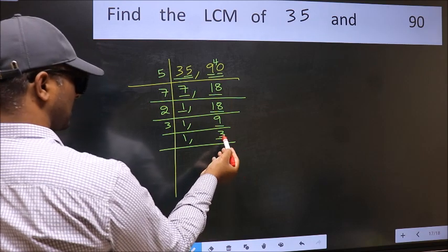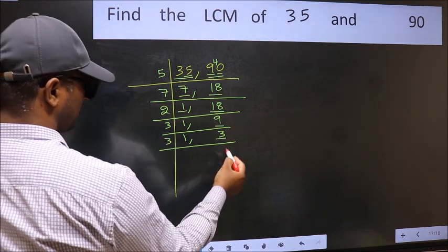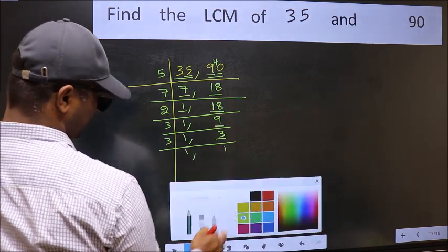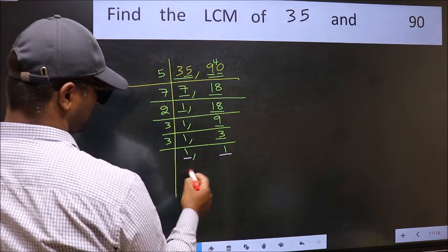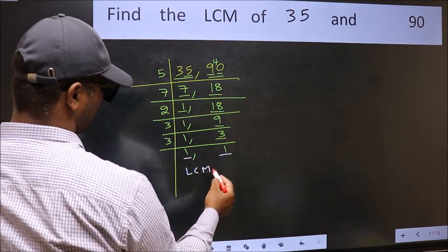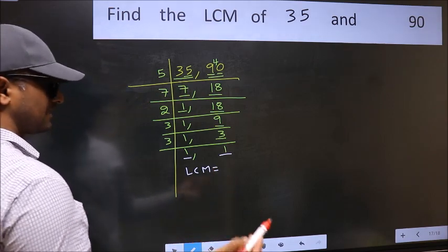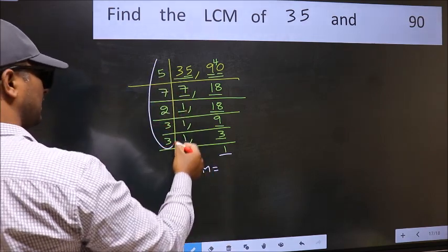Now here we have 3. 3 is a prime number, so 3 times 1 is 3. So we got 1 in both places. So our LCM is the product of these numbers.